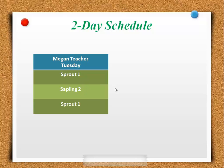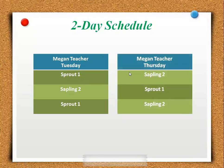You may be able to guess — it'll then go sapling, sprout, sapling. And that's because, just like a Monday, Wednesday, Friday schedule, students will go to three classes with each teacher throughout the week.